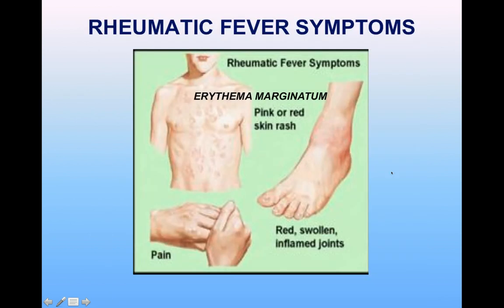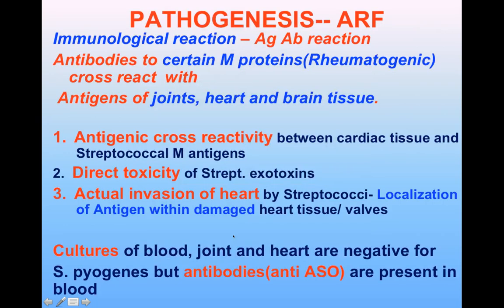Another picture shows the symptoms of rheumatic fever: a pink rash in ring forms over the torso — erythema marginatum — and inflamed, swollen, red joints. The pathogenesis is believed to be an immunological reaction to antibodies formed against rheumatogenic M proteins, which cross-react with antigens of joint, heart, and brain tissue.